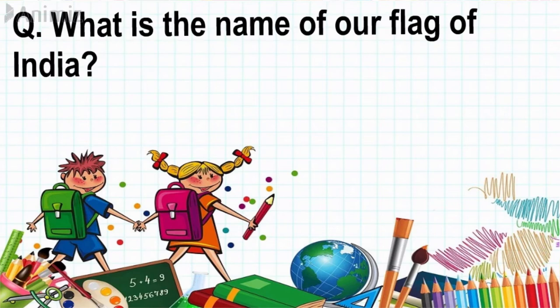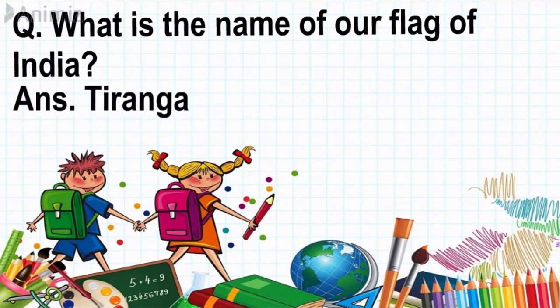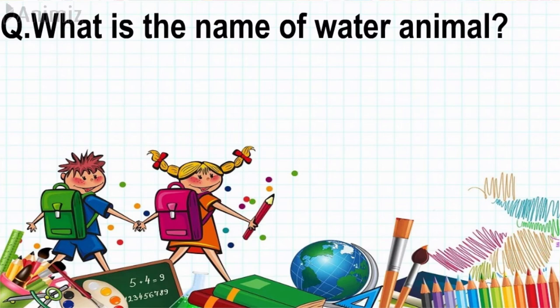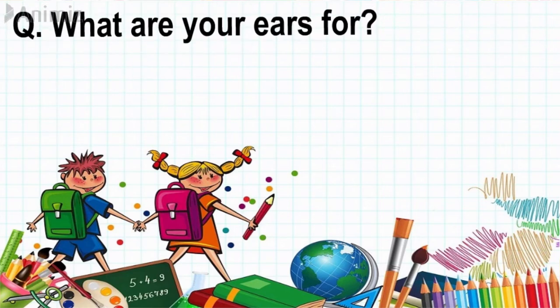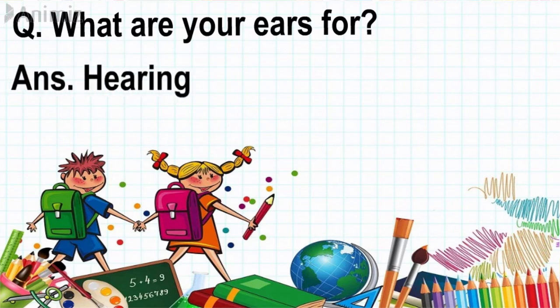Question: What is the name of our flag of India? Answer: Tiranga. Question: What is the name of water animal? Answer: Fish. Question: What are your ears for? Answer: Hearing.